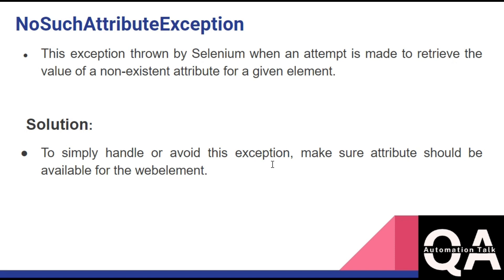The next exception is NoSuchAttributeException. This exception is thrown by Selenium when an attempt is made to retrieve the value of a non-existent attribute for a given element. It means that Selenium is trying to find an attribute that is not associated with that web element. For example, suppose a button has an active 'class' attribute, and you are trying to get any other attribute that is not associated with the button — you are going to get this exception. The simple solution is to make sure that the attribute is available for the web element before trying to retrieve it.